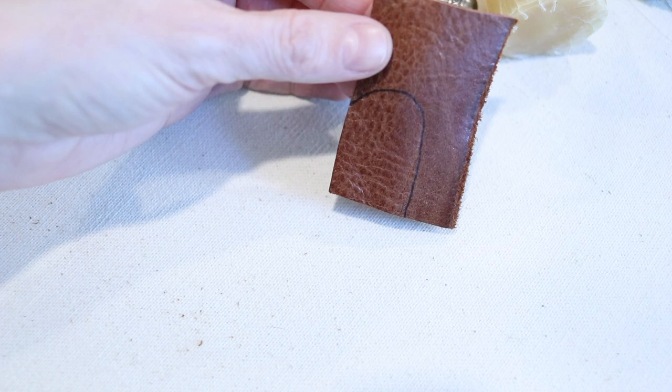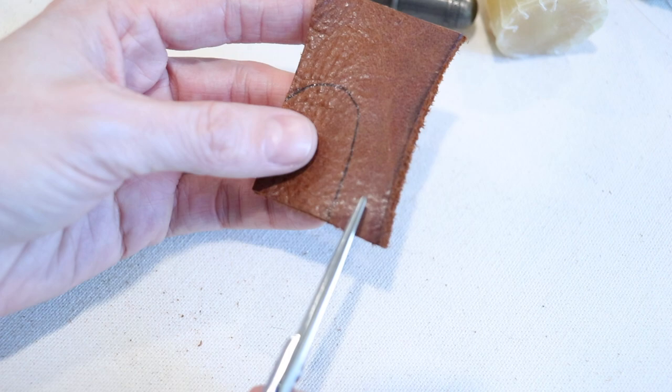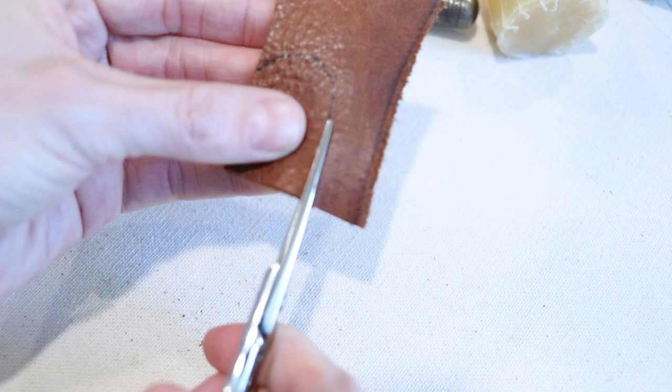After tracing around your middle finger of your dominant hand on one piece of your leather, it's time to begin cutting. Grab a pair of scissors that are sharp enough to cut through leather easily and begin cutting around the mark that you just traced.